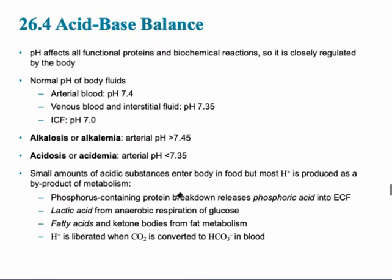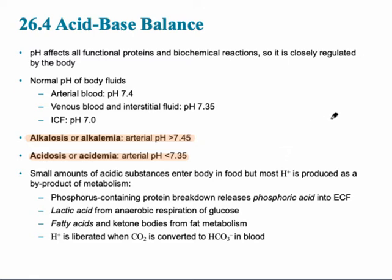In regards to acid-base balance, it's extremely important that the pH range in the blood stays within 7.35 to 7.45. If it's greater than 7.45 in the arterial blood, the condition of alkalosis or alkalemia occurs. In the case of acidosis, the arterial pH is less than 7.35. Small amounts of acidic substances can enter the body through food, but most acid is produced as a byproduct of metabolism.